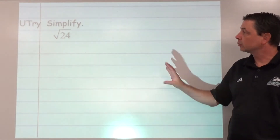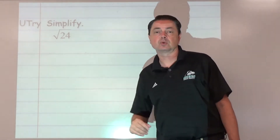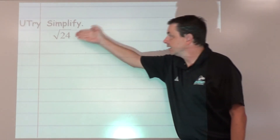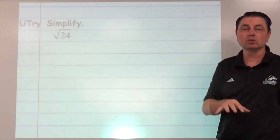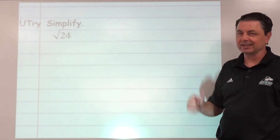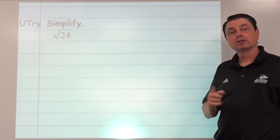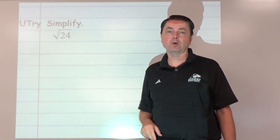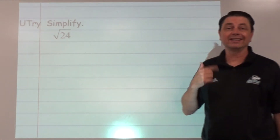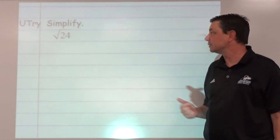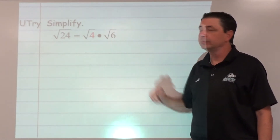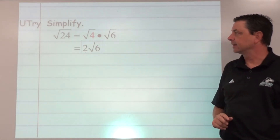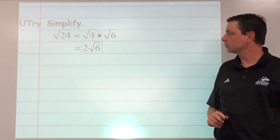You try this — pause the video. Simplify the square root of 24. Look at your list of perfect squares. Which of those is a factor? Split it up — what times what? Note: 1 never really helps because it doesn't change anything. The perfect square we're looking for is 4. 4 is a factor of 24; it's 4 times 6. So we break it up into the square root of 4 times the square root of 6. The square root of 4 is 2, so our final answer is 2 times the square root of 6.